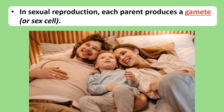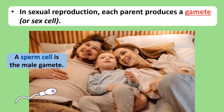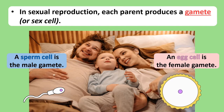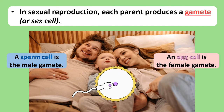Each parent produces a gamete, also known as a sex cell, which are involved in reproduction. The male parent produces the male gamete, the sperm cell. The female parent produces the female gamete, the egg cell. During sexual reproduction, the nuclei of these two gametes — the sperm and egg cell — join together in fertilisation to create a new individual.